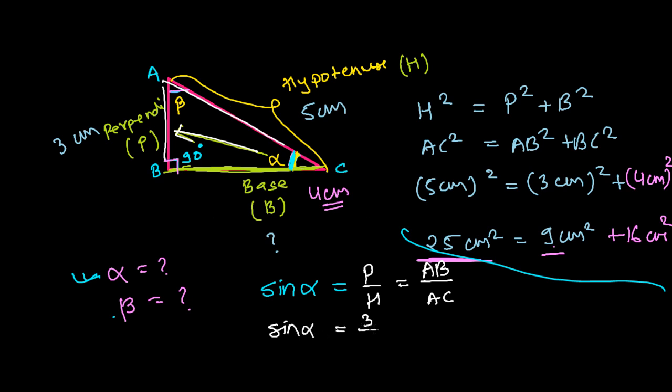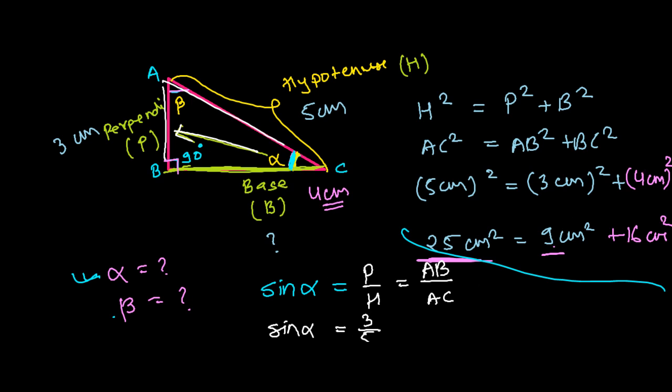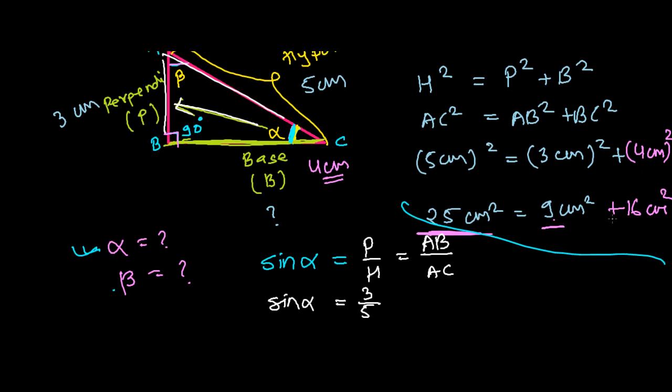From this step, you can simply say alpha equals sine inverse of 3 over 5. And now you can do it in the calculator, sine inverse.